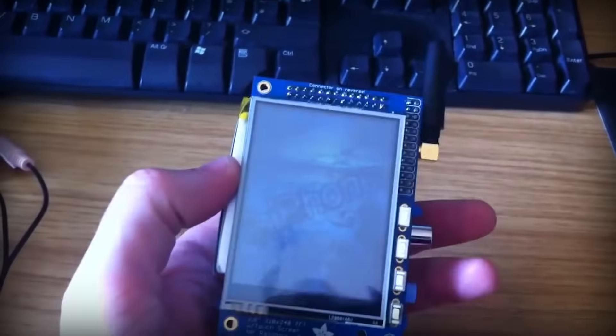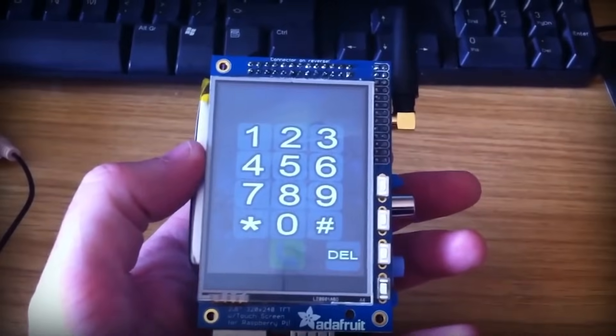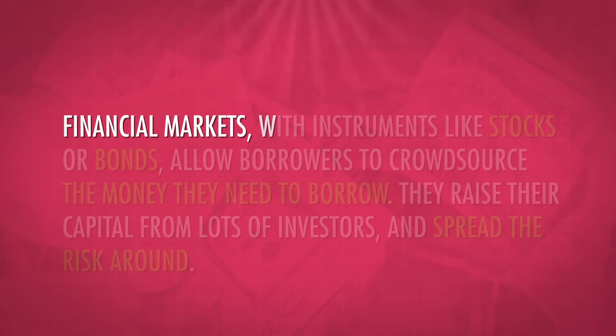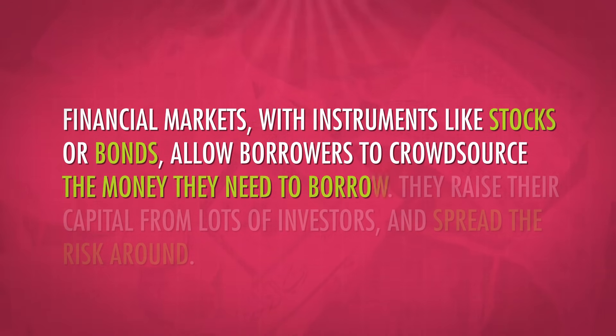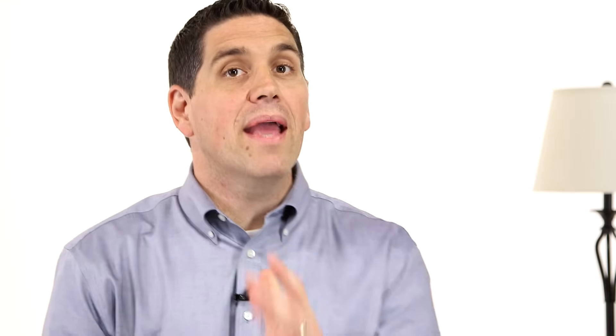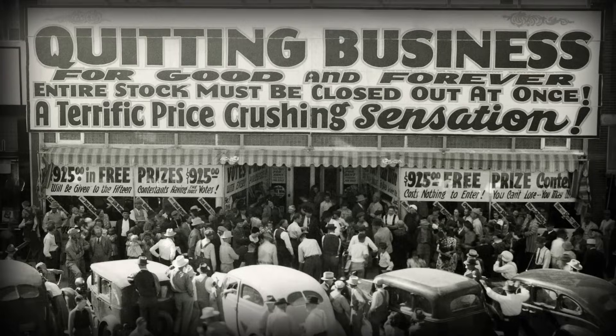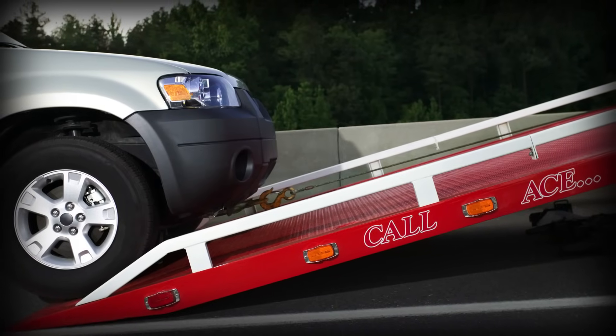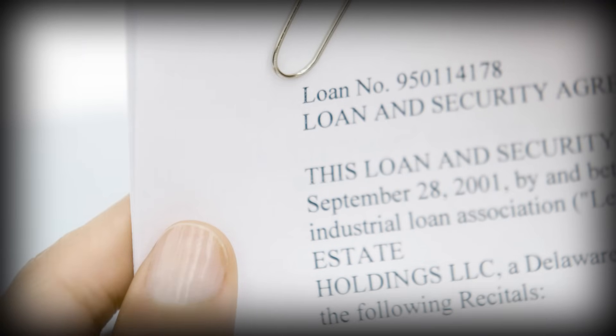Bonds and stocks are both financial instruments traded on markets with many buyers and sellers — bonds are debt instruments and stocks are equity instruments. Banks are financial institutions that, with the help of the FDIC, safeguard our money while making loans to households and businesses. Why do we need this complicated financial system instead of lending directly? Financial markets allow borrowers to crowdsource capital from many investors, spreading the risk. Banks accumulate small deposits from thousands of people and use that to make loans — like Kickstarter, but better, because you get money back. From the lender's point of view, spreading savings across many loans means a few defaults won't wipe you out.